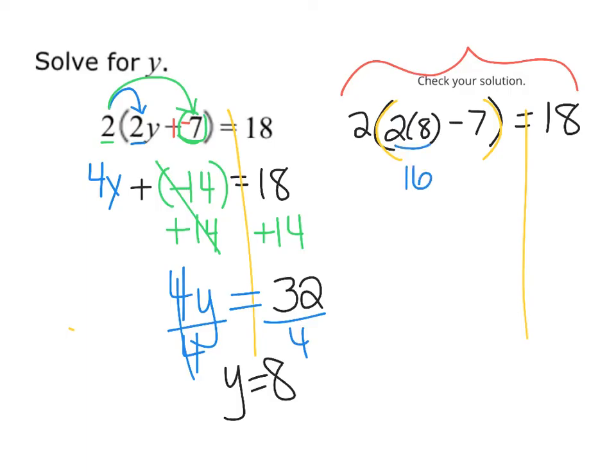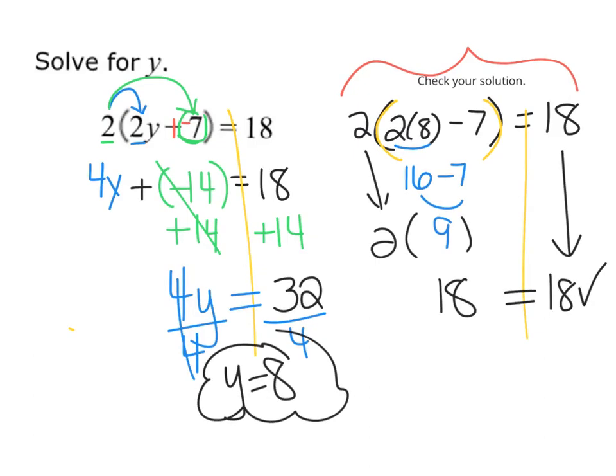So, we have 2 times 8. That's 16. And 16 minus 7, that equals 9. And then I have to bring down that times 2 still. 2 times 9 gives me 18. And it does check because the other side of my equation was 18. So, my solution is y equals 8.